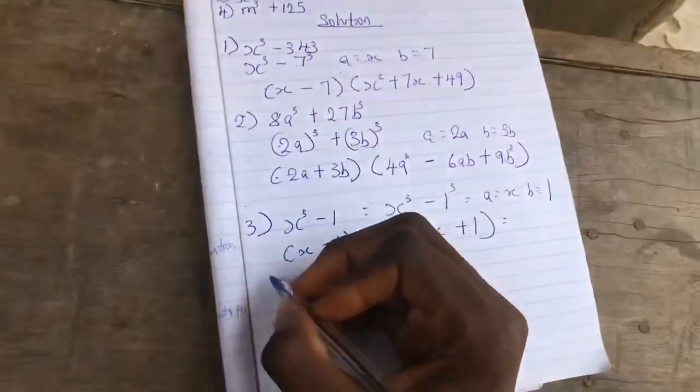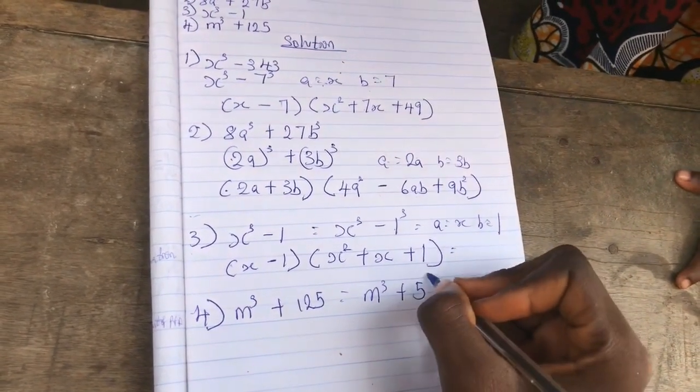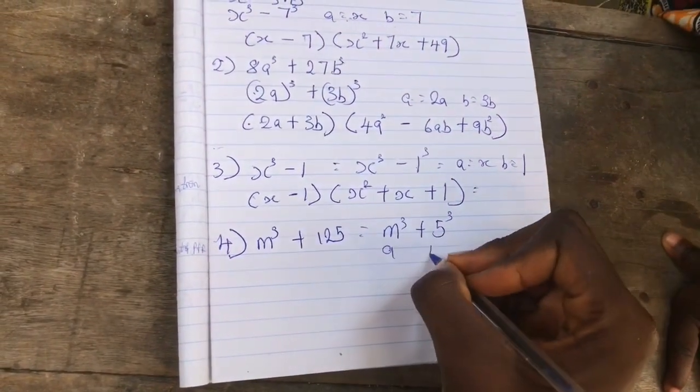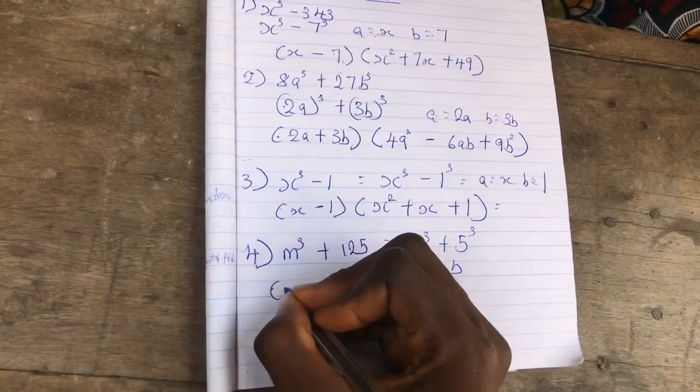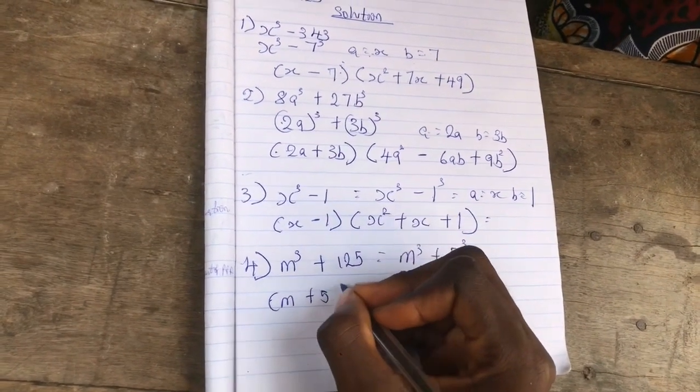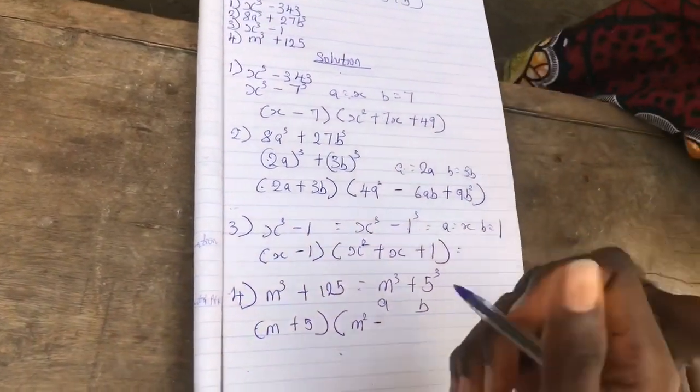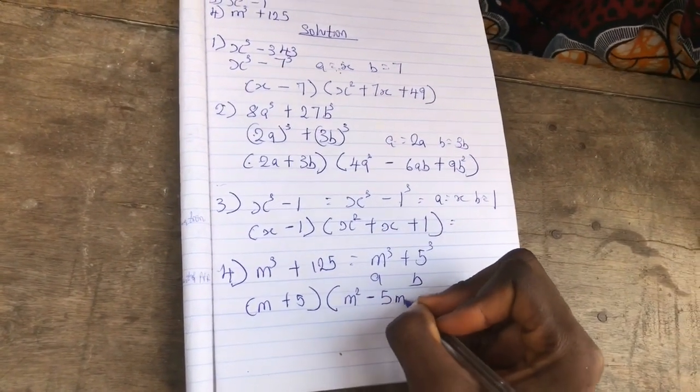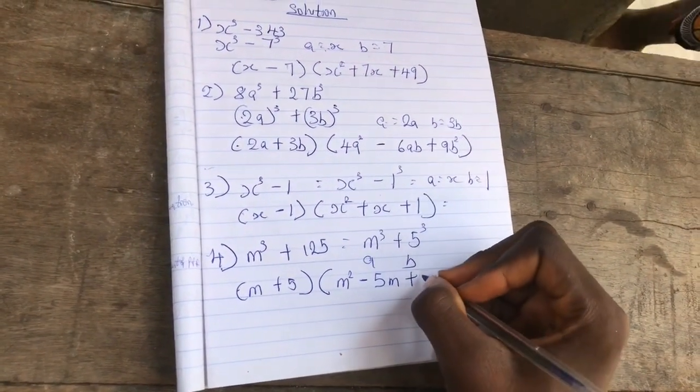Our number four here is m³ + 125. This is m³ + 5³. Our a is m and b is 5. Remember it's plus, which is sum. Therefore our answer is (m + 5)(m² - 5m + 25). And you can call it a day.